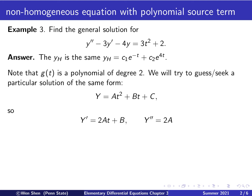Now comes the tricky part — finding one particular solution for the non-homogeneous equation. Let's look at the right-hand side. G here is a polynomial of degree 2, and we want some function that, after taking derivatives, becomes a polynomial. We know that if you differentiate a polynomial, it remains a polynomial but with different degrees and coefficients. With that in mind, we will seek a particular solution in the same form as g.